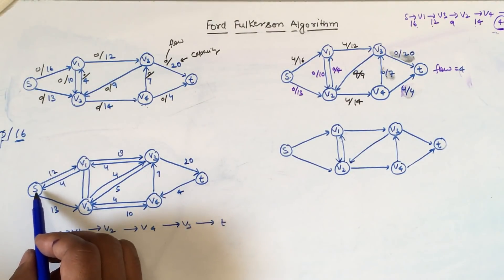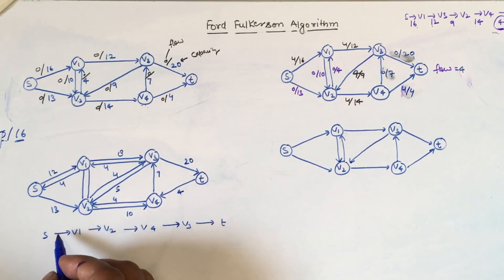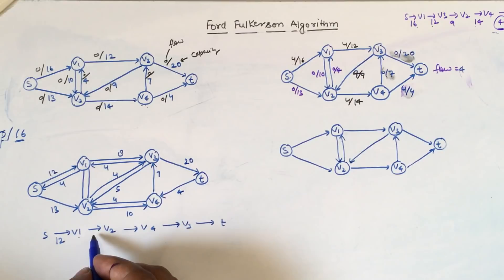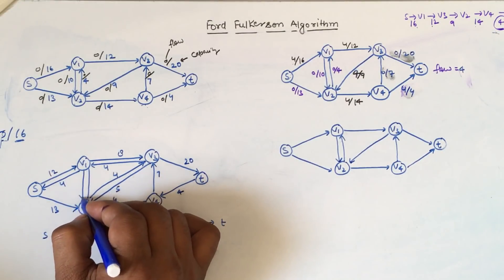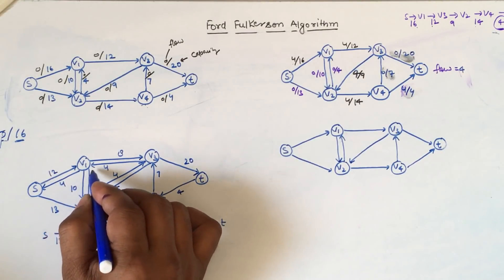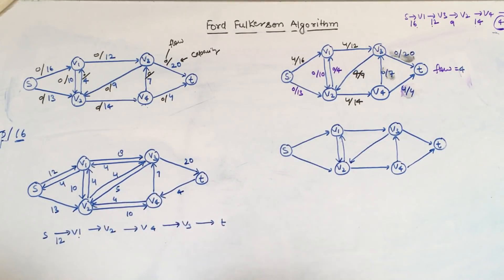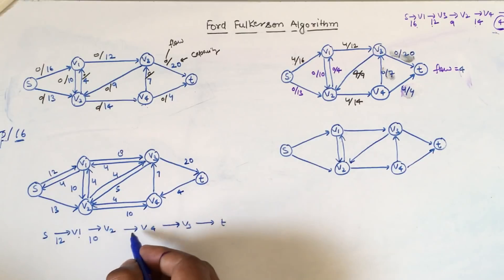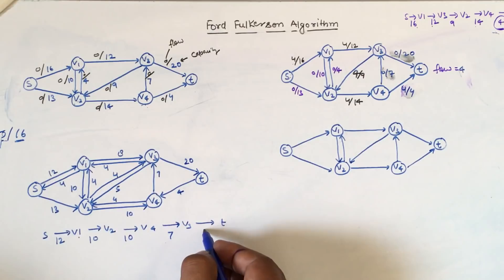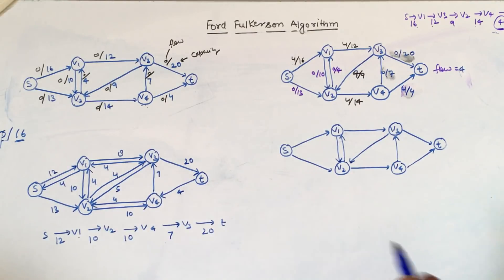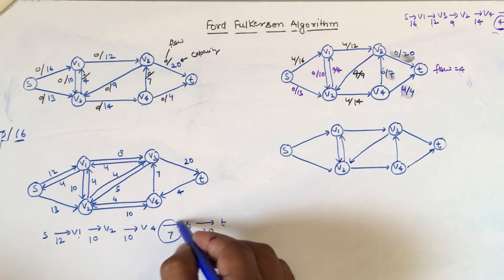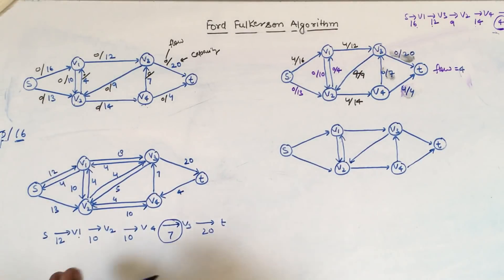From s to v1 the residual capacity is 12. From v1 to v2 the residual capacity in the forward direction is 10, and in the reverse direction we have flow 4. From v2 to v4 we can flow 10, from v4 to v3 we can flow 7, and from v3 to t we can flow 20. So the bottleneck residual capacity is 7 — we can insert 7 more units into the network.